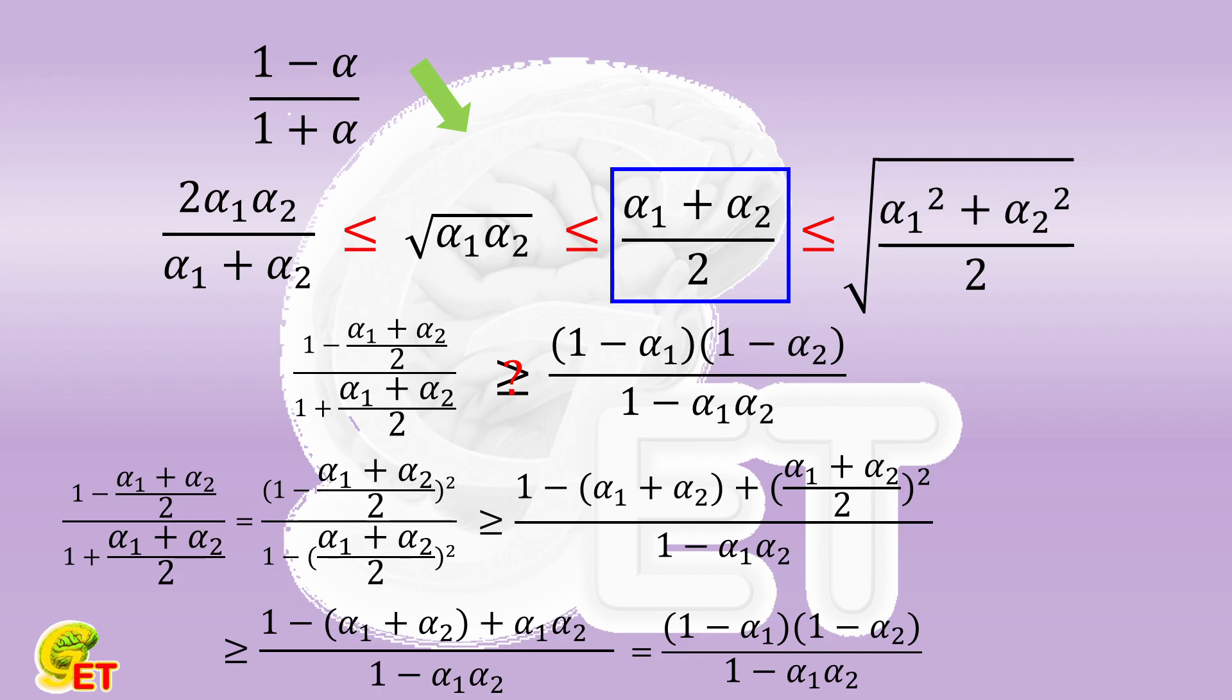Regarding the reason why the inequality corresponding to the quadratic mean is not correct, the easiest way to prove it wrong is to select some values of α₁ and α₂ to calculate until we find a case against its conclusion.